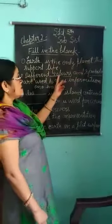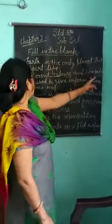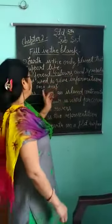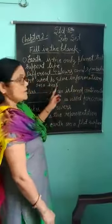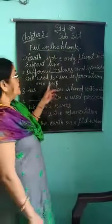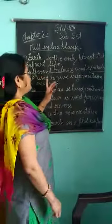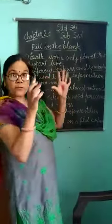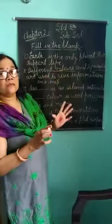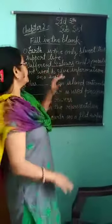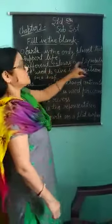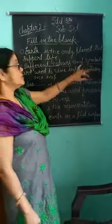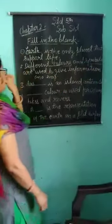Different colors and symbols are used to give information on a map. Map per jo saari information di jaati hai, us information ko dene ke liye hum colors aur symbols ka use karte hain.